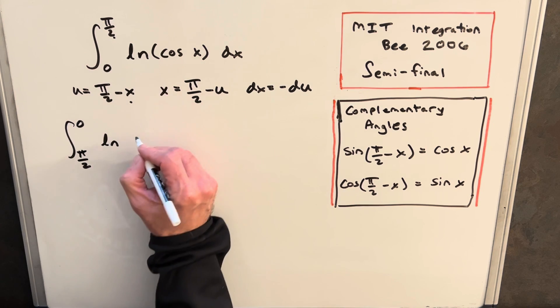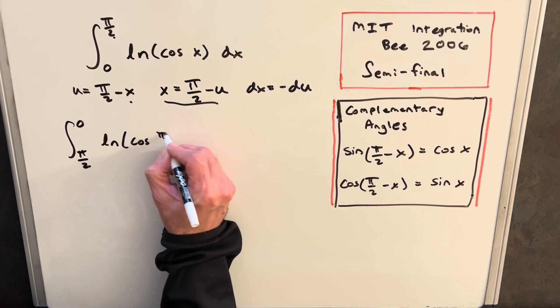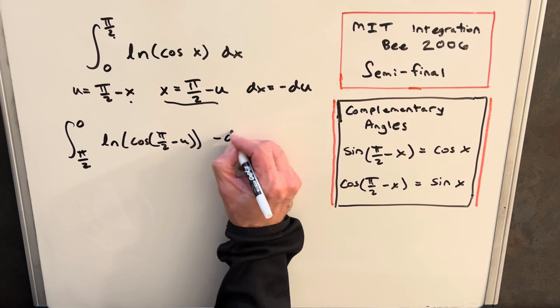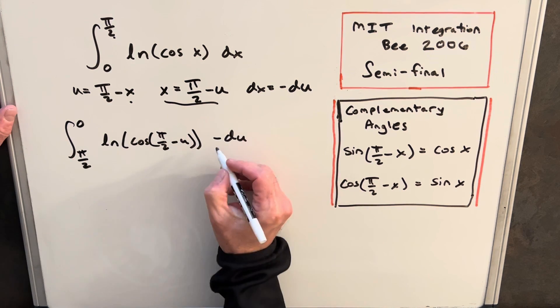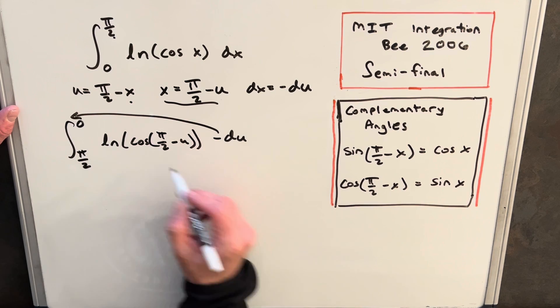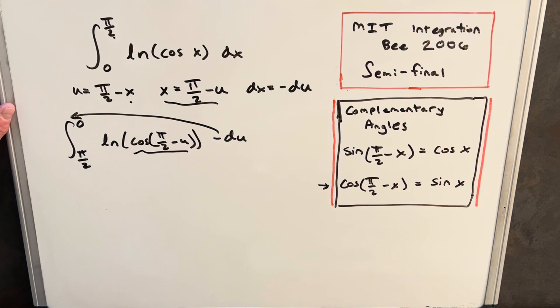Then we'll have our ln cosine, we'll substitute in our x, so cosine pi over 2 minus u, and for dx we're going to have minus du. But then we can use this minus sign to flip the bounds of integration, and then we can use our formula for cosine here and change this to sine.